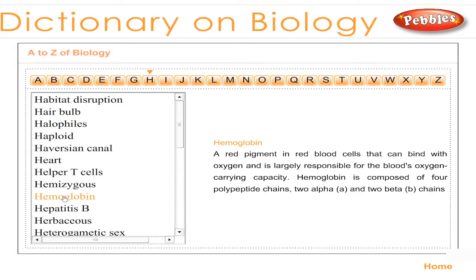Hemoglobin: a red pigment in red blood cells that can bind with oxygen and is largely responsible for the blood's oxygen-carrying capacity. Hemoglobin is composed of four polypeptide chains: two alpha and two beta chains.